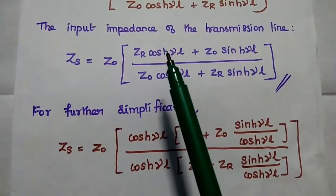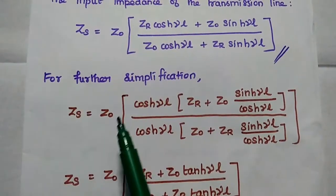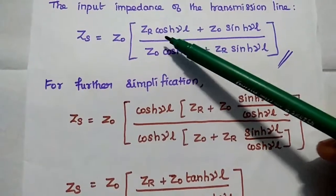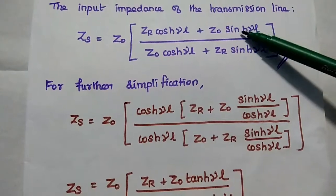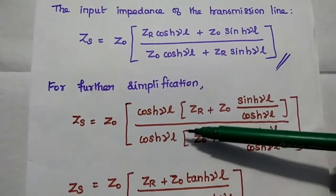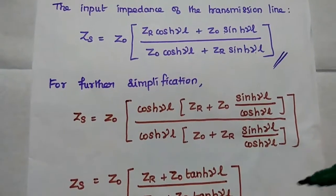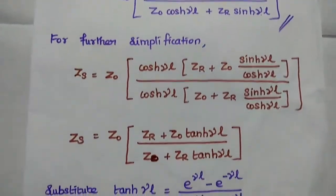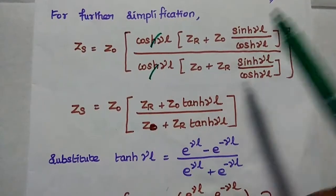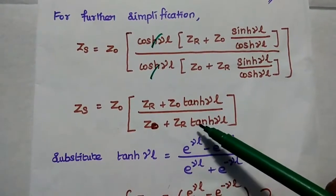For further simplification, we take cosh(γL) as a common term from both the numerator and denominator. Then Zs becomes Z0 times the quantity Zr plus Z0 times sinh(γL) divided by cosh(γL), all over Z0 plus Zr times sinh(γL) divided by cosh(γL). Since sinh divided by cosh is tanh, we can cancel cosh(γL) in numerator and denominator. Zs equals Z0 times the quantity Zr plus Z0 tanh(γL), divided by Z0 plus Zr tanh(γL).